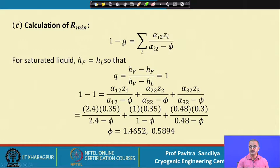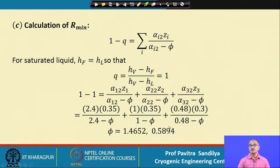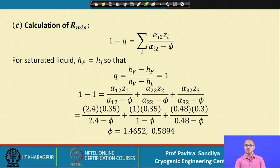We expand the summation for all components, plug in the relative volatilities and compositions, and obtain an equation solely in terms of φ. This turns out to be a quadratic polynomial (degree 2), yielding two roots. Both roots are positive, so the question becomes how to choose the correct value of φ for further calculation.